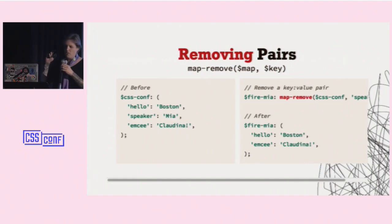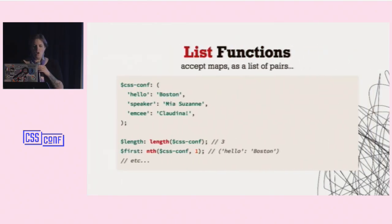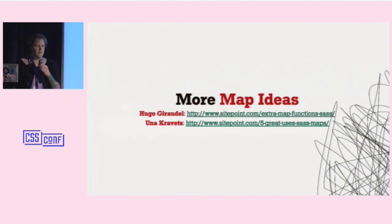So, there's a lot of other things you can do with maps. You can remove pairs. Map remove is really helpful when you need to do that. I actually don't need to do that a lot. But there it is. You can fire me from the conference. Just map remove CSS conf speaker. And I'm not there anymore. You can also do some introspection. There's map has key, map keys, map values. So, you can return a list of all the keys, a list of all the values. You can check to see if a key exists. Those are all handy. All of the list functions in SASS work for SASS maps. They just treat the map as a list of pairs. And you can find out more from Hugo and Yuna and other places online. There's a lot of other good ideas for using maps. So, that's it.